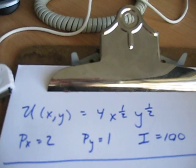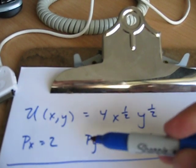Okay, if you haven't watched the video on how to do utility maximization in general, go watch that first. So this is a specific case for a Cobb-Douglas preference structure. We've got a utility function, price of x is 2, price of y is 1, income is 100.